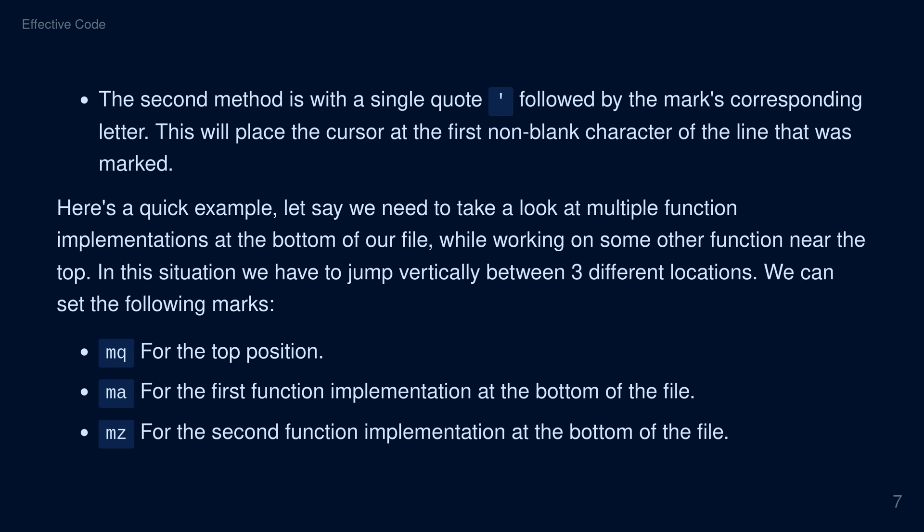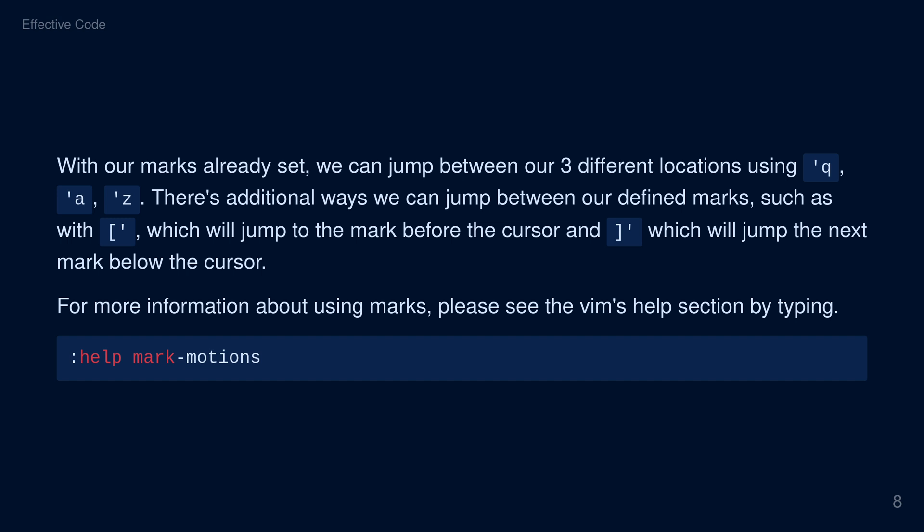Here's a quick example. Let's say we need to take a look at multiple function implementations at the bottom of our file, while working on some other function near the top. In this situation, we have to jump vertically between three different locations. We can set the following marks: type M followed by Q for the top position, M followed by A for the first function implementation at the bottom of the file, and M followed by Z for the second function implementation at the bottom of the file. With our marks already set, we can jump between our three different locations using single quote followed by either Q, A, or Z.